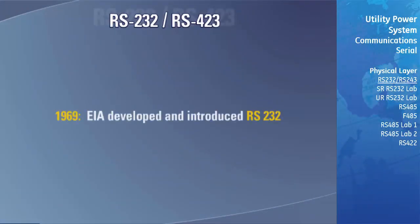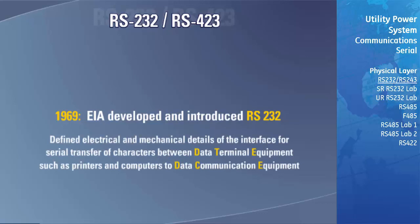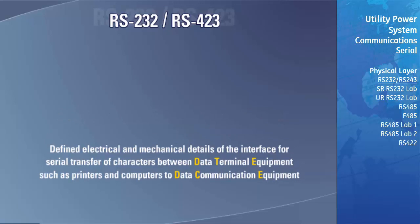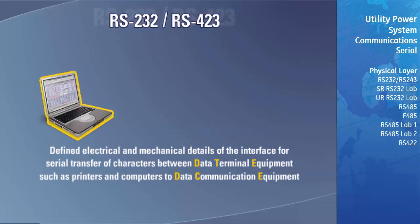In 1969, the EIA developed and introduced the RS-232 Interface Standard. This standard defined the electrical and mechanical details of the interface for the serial transfer of characters between data terminal equipment such as printers and computers to data communication equipment such as modems.